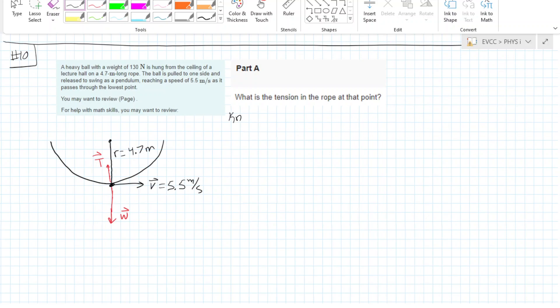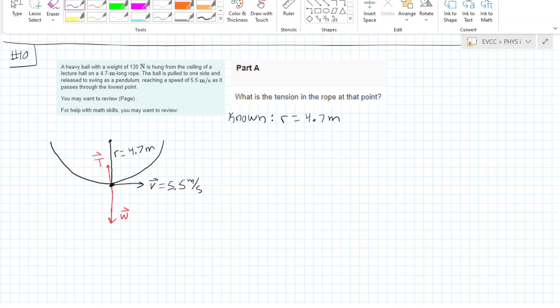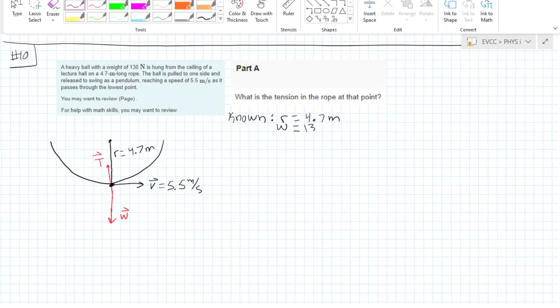I always like to start by getting all my knowns down on paper. We know we have a radius of 4.7 meters. They've given us a weight force of 130 newtons.